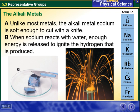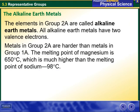When sodium reacts with water, enough energy is released to ignite the hydrogen that is produced, creating a flame. The second group of the periodic table — group 2A — contains elements called the alkaline earth metals.